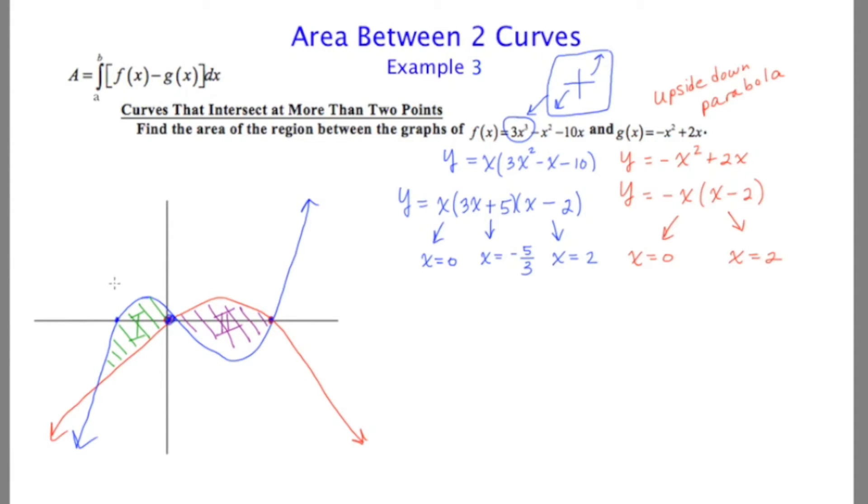So over here, the blue is on top and the red is on the bottom. But over here, the red is on the top and the blue is on the bottom. Now, anticipating setting up the definite integral, we're going to need to know what the upper and lower limits of integration are. In other words, we're going to need to know this point here, this point here, and this point here.